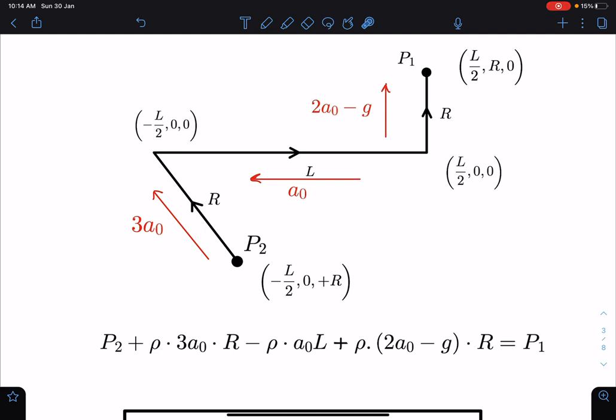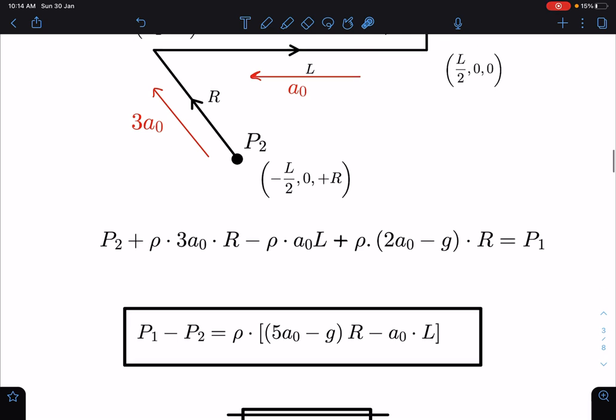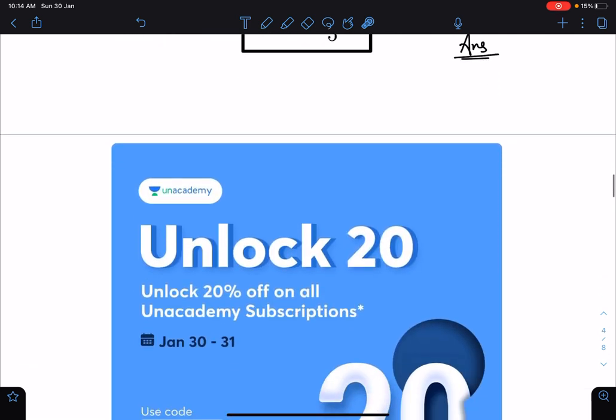So when we simplify this, we are getting P₁ - P₂ as ρ(5a₀ - g)·R - a₀L. So we want this expression ΔP to be independent of R. That means this coefficient must be 0, or we can say a₀ is going to be g/5. This is going to be the final answer for this problem.